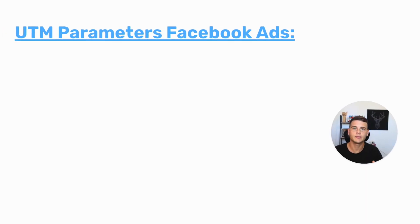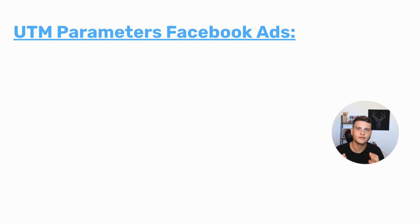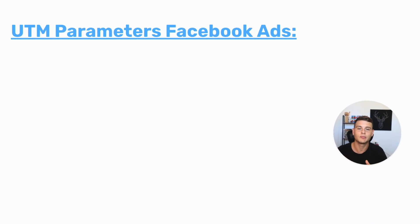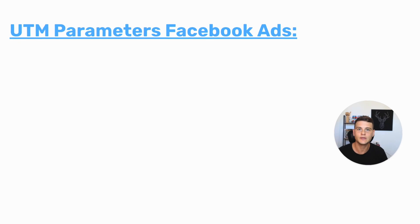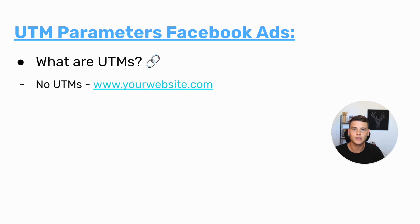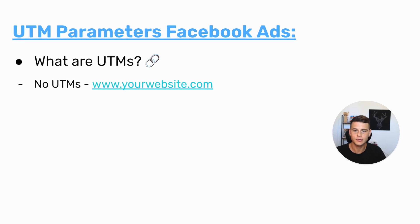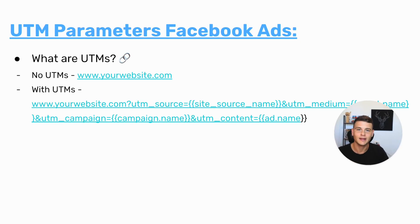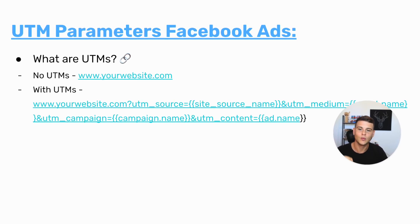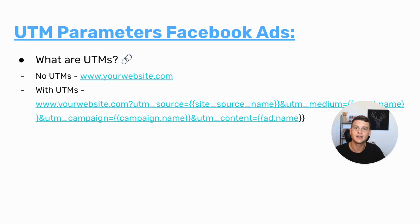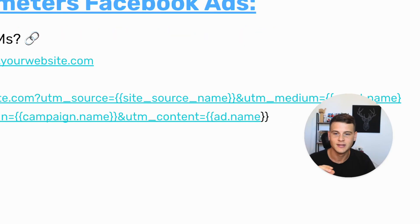First, let's make sure we have a full understanding of UTM parameters on Facebook ads. We'll start with what UTMs are exactly. Essentially, UTMs are custom values that are added at the end of your link. So for example, this link without UTMs is just your website.com, and this link with UTMs is your website.com with the custom values appended.